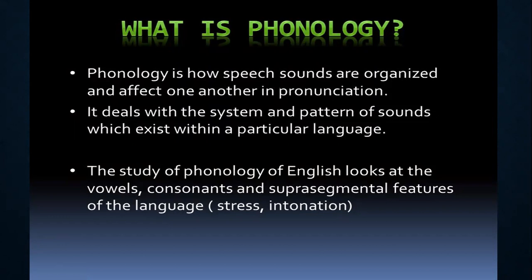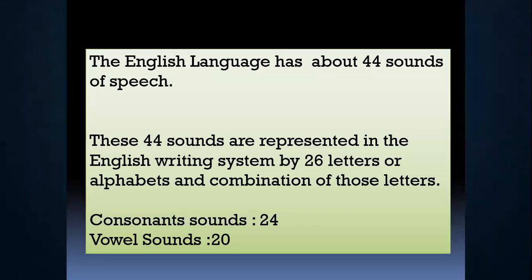In phonology, each and every language has a distinctive sound. So if you look at the structure of the English language, especially in terms of phonology, it has 44 sounds. If you divide these 44 sounds, there are 24 sounds which are consonants and 20 sounds are vowel sounds.